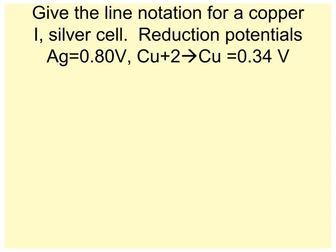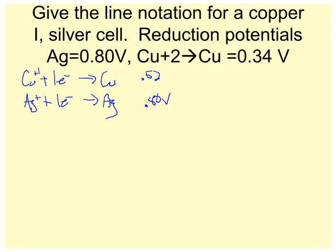Give the line notation for a copper I, silver cell. Reduction potentials for those are given. So what I'm going to do first is write out these guys. Copper plus one plus one electron makes copper, and silver plus one plus one electron makes silver. I'm going to look up their voltages. Silver is 0.80 volts, and copper is 0.52 volts. So they're both positive, but one of them still has to be flipped. So I'm going to flip this one because that way I'll still have a positive voltage. Let me change colors to make my life a little easier.